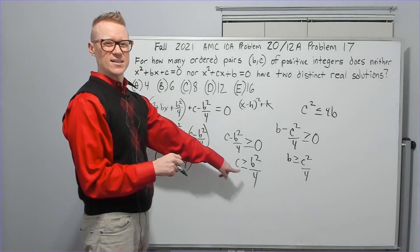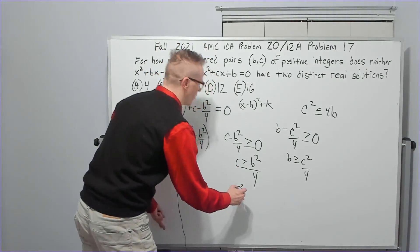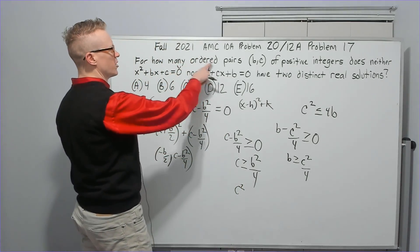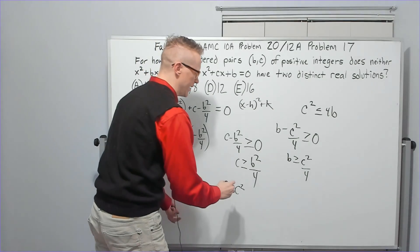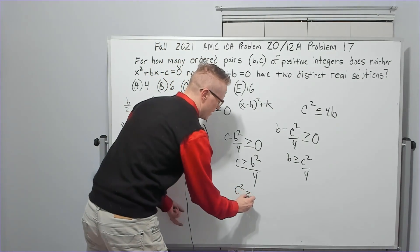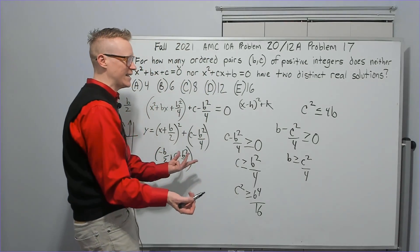If I square this, I'll get greater than or equal to b to the fourth over 16. Ah, okay. Now I've got c squared and c squared. I can put it like this, b to the fourth over 16.